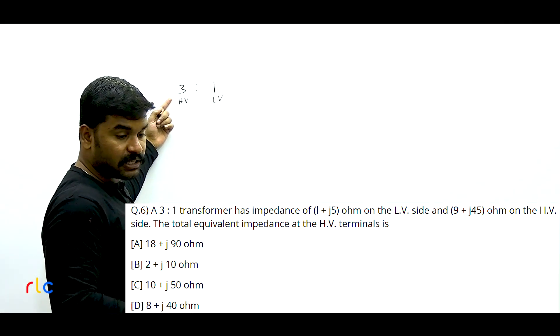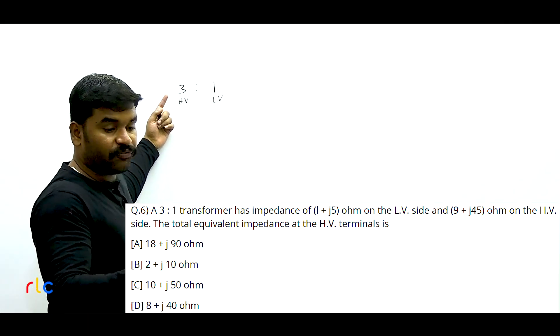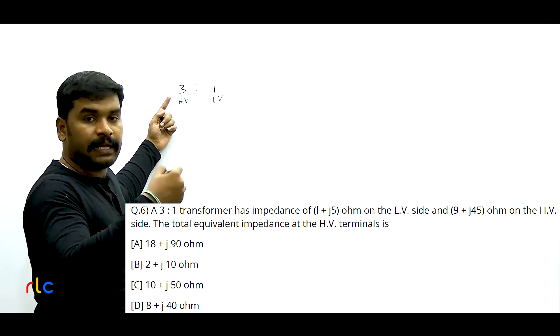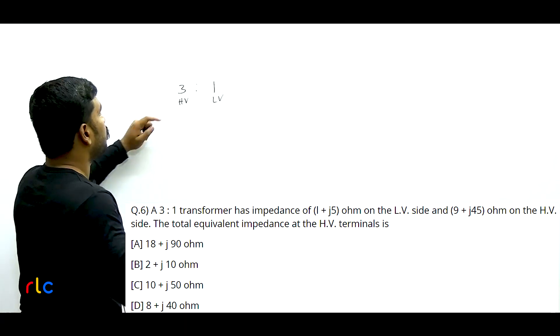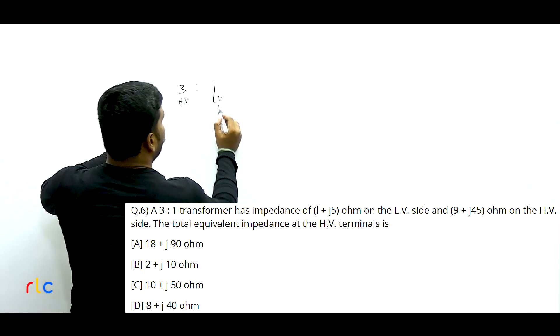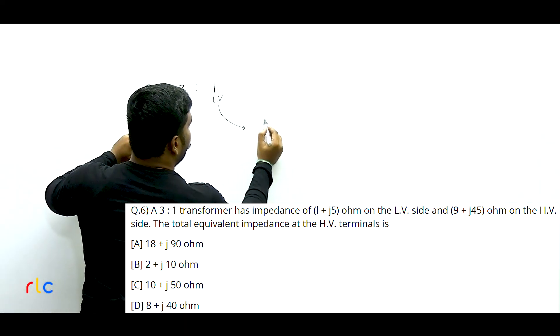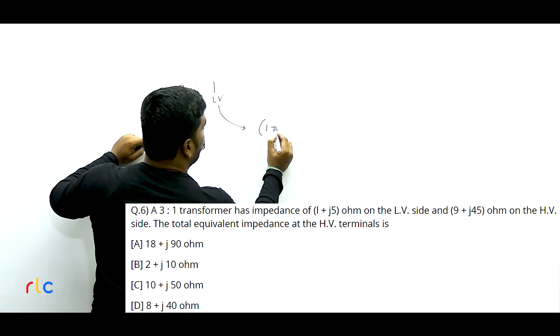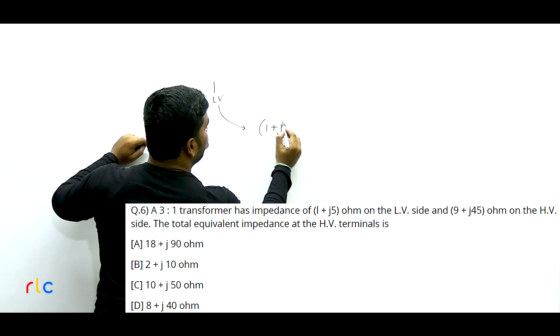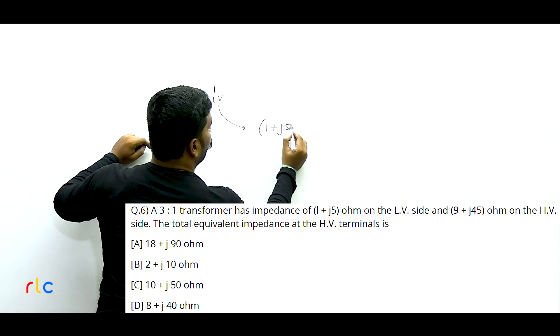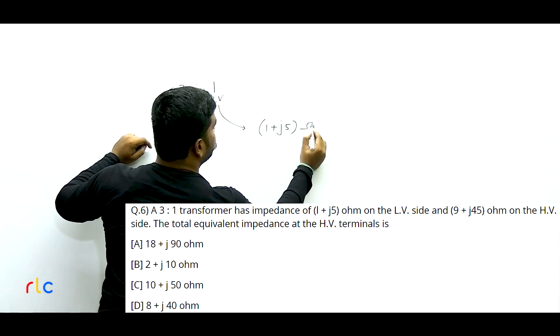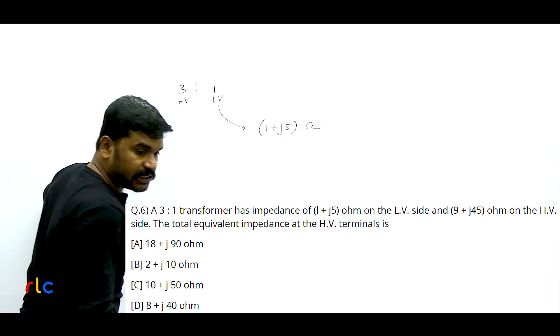Statement 4 — reduce core losses: has no logical connection. Statement 5 — reduce total conductor material: this is correct. HV winding already has more turns; placing it on the outside (larger diameter) is appropriate. If LV were on the outside, more conductor material would be needed for the same number of turns due to larger circumference, increasing material cost.